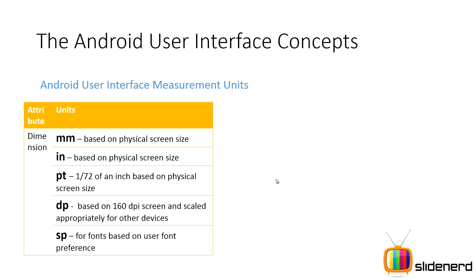The Android UI measurement units are: millimetres, inches, points, DP, and SP. Out of these five only the last two actually matter. Millimetres, inches, and points are all fixed physical sizes and you are not supposed to use them. Use DP instead.